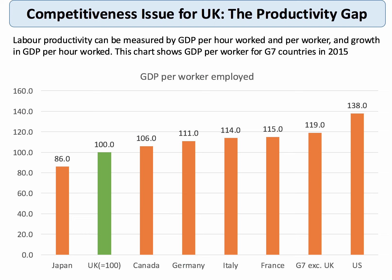We take GDP per worker employed — the data is for 2015 — and we take the level of GDP per worker employed for Britain as our base for the index, so that has a value of 100. We then express productivity in the other G7 countries as a percentage relative to the UK level. We find, for example, that Japan's productivity is lower than the UK on this basis, but countries such as Germany are 11% higher. And productivity in terms of GDP per worker employed in the United States is nearly 40% higher. This is the idea of the productivity gap.